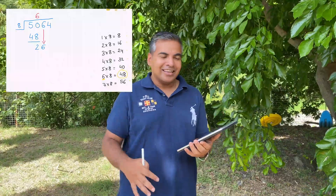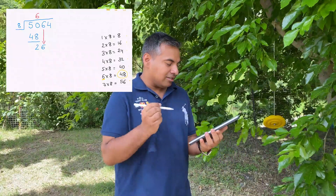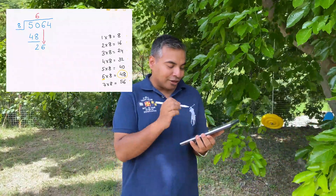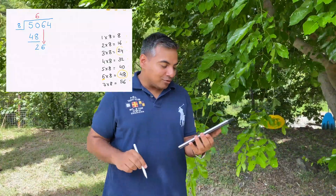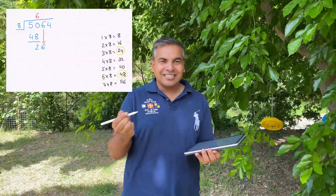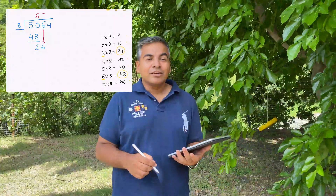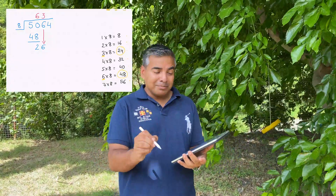And then it becomes easy. Step five is actually a repeat of step two: we find the closest multiple to twenty-six in the table of eight. We can see that the closest one is twenty-four. We circle twenty-four — twenty-four divided by eight gives three. So we put number three on top of the line next to the six.